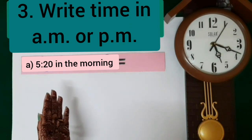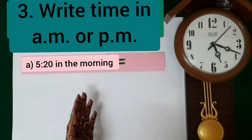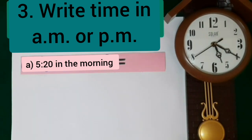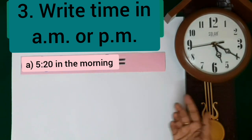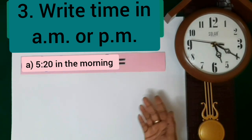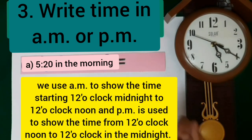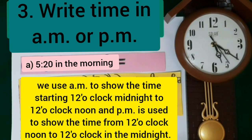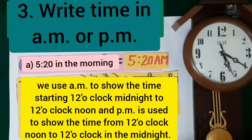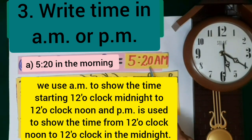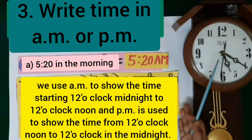In question number 3, we have to write the time in a.m. or p.m. In part A, it is 5.20 in the morning. We use a.m. to show the time starting from 12 midnight to 12 noon, and p.m. for 12 noon till 12 midnight. So 5.20 in the morning is written as 5.20 a.m.